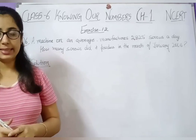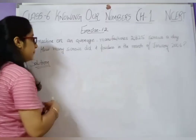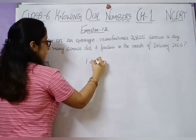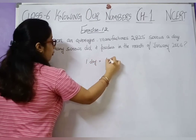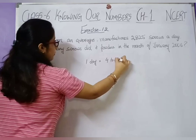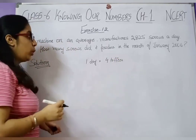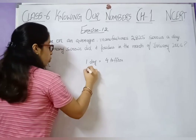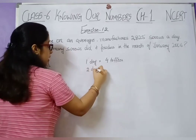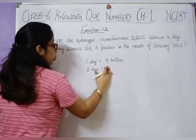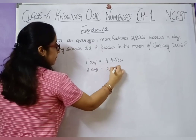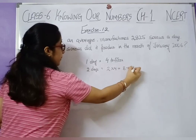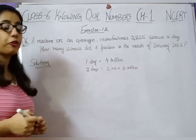Let's take an easy example to understand. Suppose you eat 4 toffees in one day. In two days, you would multiply 2 by 4 — so you eat 8 toffees in 2 days.